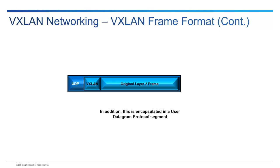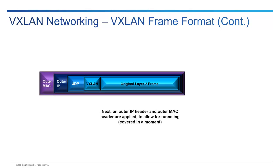This VXLAN header, in turn, gets wrapped in a UDP header. Part of the reason for this is that GRE causes multipathing to not work as well, especially if you have multiple links — such as in a spine-leaf topology — where GRE runs into problems. This is then put in an outer IP header and an outer MAC. These last two encapsulations relate to how traffic is sent switch-to-switch across tunnels.